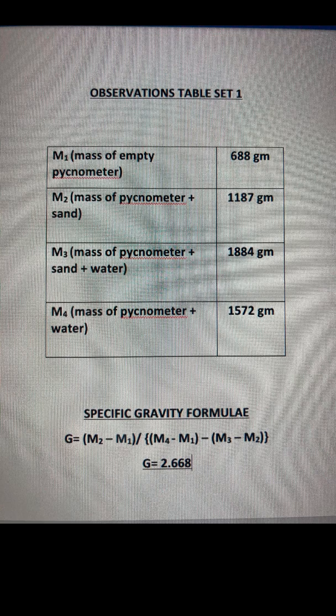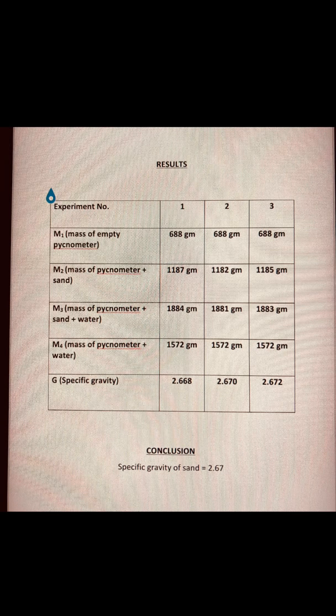Keep in mind this is the result of experiment set 1. We have to repeat this experiment for two more sets, obtain the specific gravity, and finally take the average of all specific gravities obtained from the three sets. After conducting the experiment for two more sets, we calculated the specific gravity as 2.67 and 2.672. Taking the average of these three, the final specific gravity of the sand came to be 2.67.